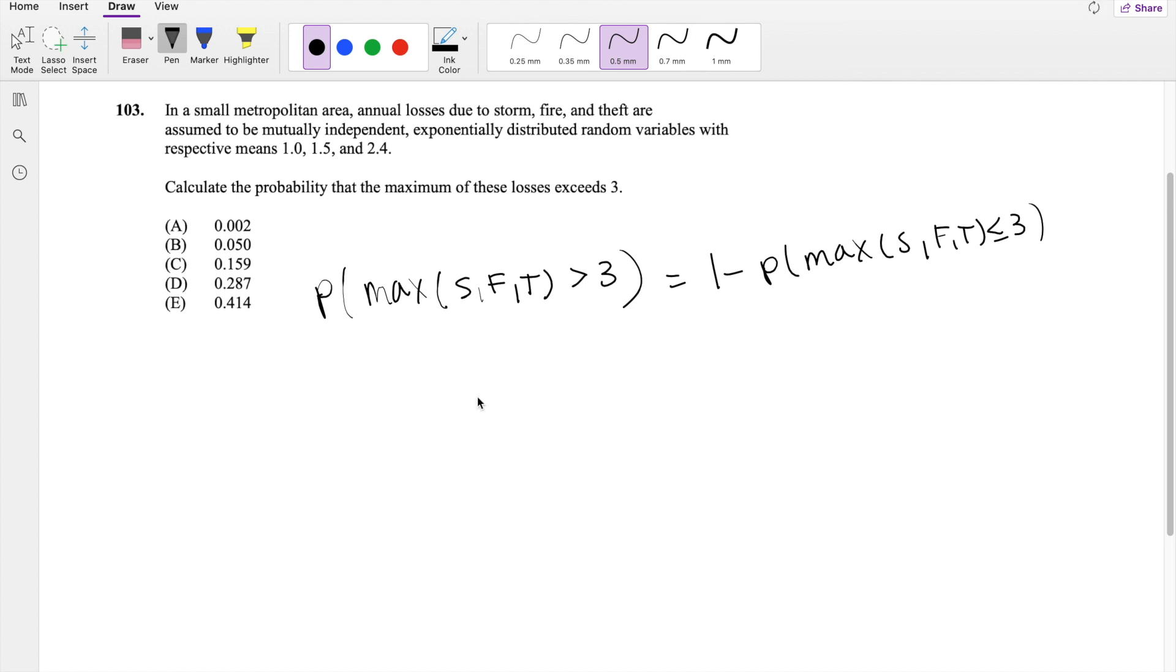And then because we know that this is independent, we can actually split this up: 1 minus the probability that max of S is less than or equal to 3, max of F is less than or equal to 3, and finally the probability that max of theft is less than or equal to 3 by independency.